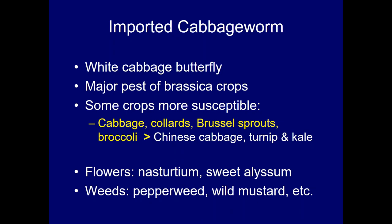The imported cabbage worm is another very common brassica pest — probably our most common caterpillar. You can quickly spot it when you notice white cabbage butterflies flying about the fields. The caterpillars are very prominent on crops like cabbage, collards, Brussels sprouts, and broccoli, which are more susceptible than Chinese cabbage, turnip, and kale. This pest also attacks flowers like nasturtium and sweet alyssum.